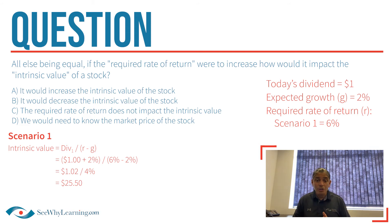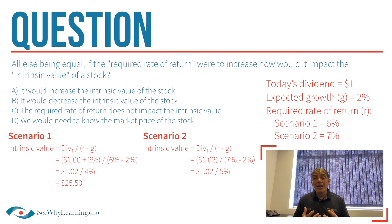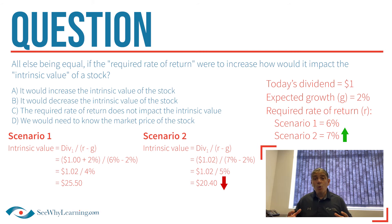Now let's do what the question suggests and increase the required rate of return to seven percent. We take the same $1.02 dividend one year from now, but now divide by seven percent minus two percent, giving us five percent. Once we calculate that, we get an intrinsic value of $20.40. As you can see, if the required rate of return goes up, the intrinsic value of the stock goes down, all else being equal.